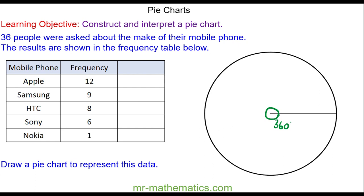We're going to create a pie chart from this information here, where 36 people were asked about the make of their mobile phone. So we have a total frequency of 36, and 12 of them had an Apple phone.